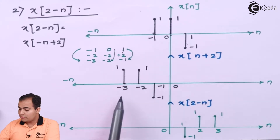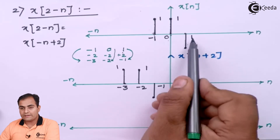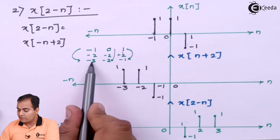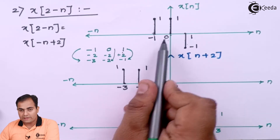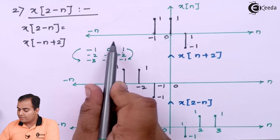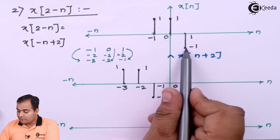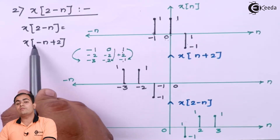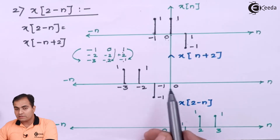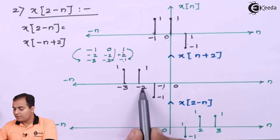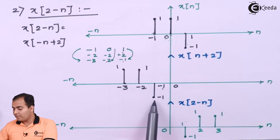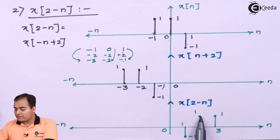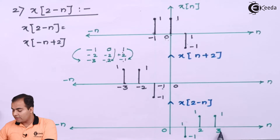After the time shift: minus 1 is at minus 3 with amplitude 1, origin (0) is at minus 2 with amplitude 1, and 1 is at minus 1 with amplitude minus 1. Now we perform the mirror image — multiply all time instances by minus sign. Minus 1 moves to 1, minus 2 moves to 2, and minus 3 moves to 3. Amplitudes are preserved: amplitude minus 1 at 1, amplitude 1 at 2, and amplitude 1 at 3.